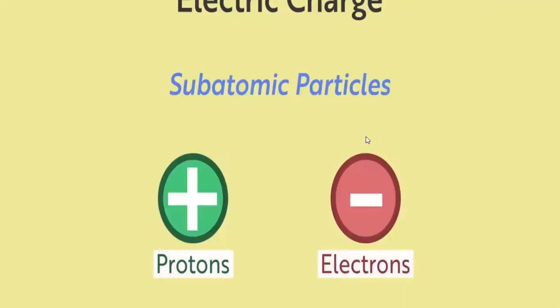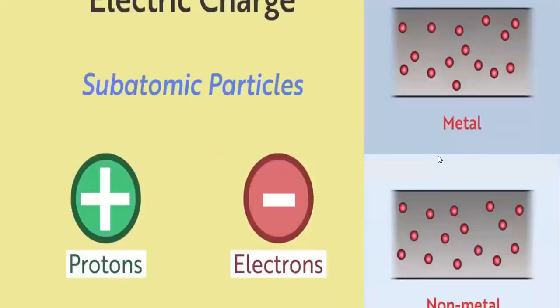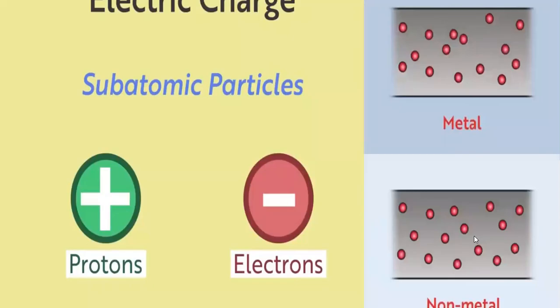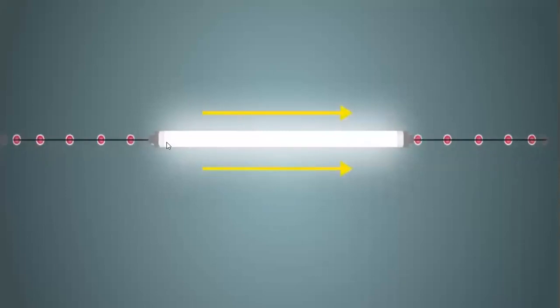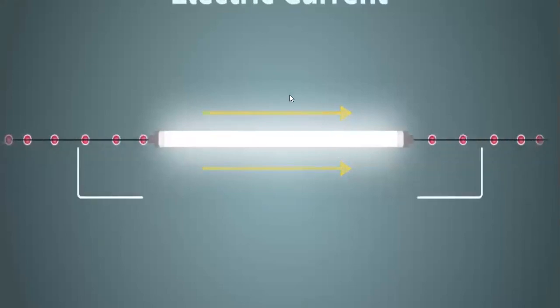There are millions and billions of electrons and protons as subatomic particles. In metals, electrons can move randomly, while in non-metals the electrons are fixed or stagnant. In a house circuit, negatively charged electrons pass through a bulb in one direction, and this flow of charged particles is called electric current.